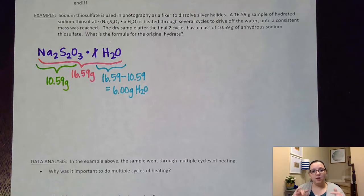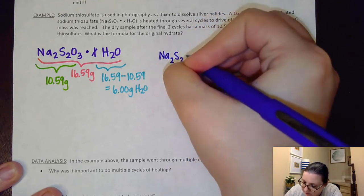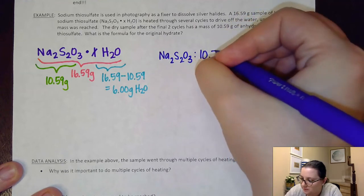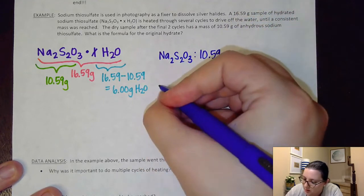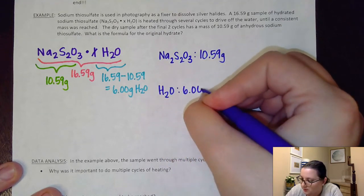All right, so now that I have my mass ratios here, now I can go through the same steps like I would with an empirical formula. Now on empirical formula, normally I would do percent to mass first. Well, I already have mass ratios here, so the next step is mass to mole. Normally I would do that for two individual elements. Here I'm doing it for these two compounds. So I'm going to have the Na2S2O3, and I'm starting off with 10.59 grams of it. And I'm going to have the H2O, and I'm starting off with 6.00 grams of it.